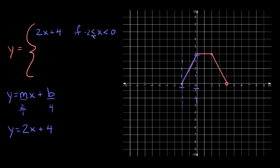Here we're attaching the equal-to symbol because at x equals negative two we have a closed circle. Over here it's kind of hard to see because the lines are overlapping, but we do have an open circle. That's why we're using just a less-than symbol and not a less-than-or-equal-to symbol.